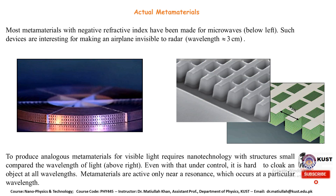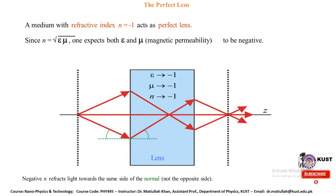Such devices are interesting for making an aircraft invisible to radar. To produce analogous metamaterials for visible light requires nanotechnology with structures small compared to the wavelength of light. Even then, it is hard to cloak an object at all wavelengths, since metamaterials are effective only near a resonance at a particular wavelength.